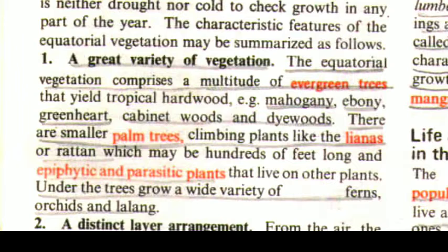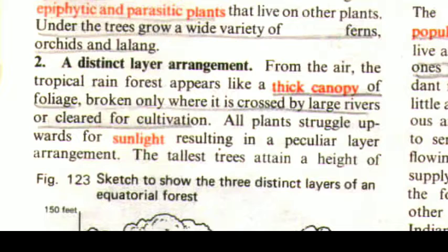The first characteristic feature of equatorial vegetation is a great variety of vegetation. It comprises a multitude of evergreen trees that yield tropical hardwood, such as mahogany, ebony, greenheart, cabinet woods, and dye woods. There are smaller palm trees, climbing plants like lianas or rattan which may be hundreds of feet long, and epiphytic and parasitic plants that live on other plants. Under the trees grow a wide variety of ferns, orchids, and lalang.